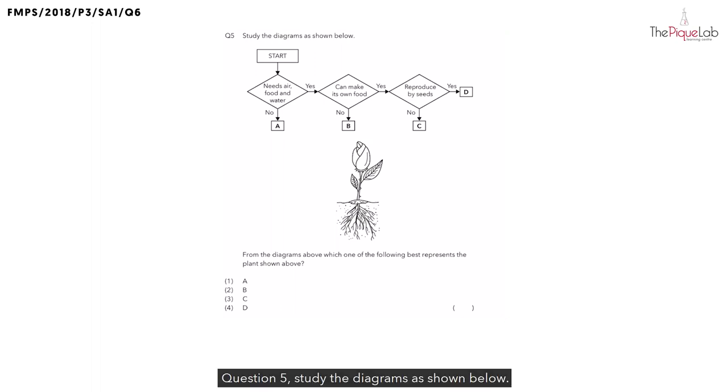Question 5. Study the diagrams as shown below. As you can see, we are given a flowchart in this question and a diagram over here. The question is asking, from the diagrams above, which one of the following best represents the plant shown above? As you can see from the flowchart, there are letters A, B, C and D and we need to find out which letter best represents this plant here.